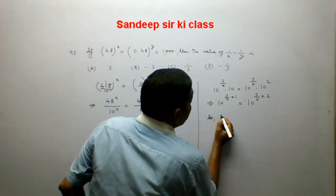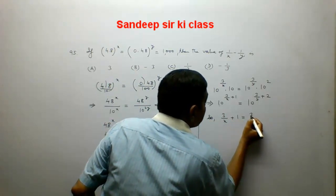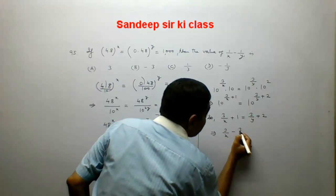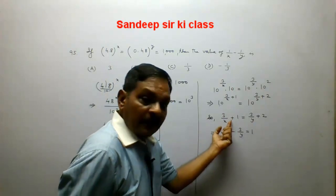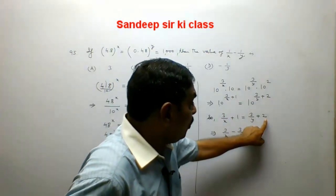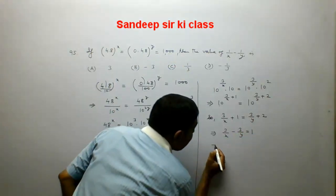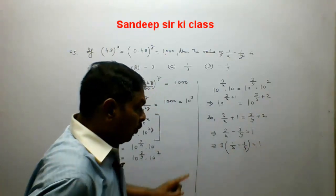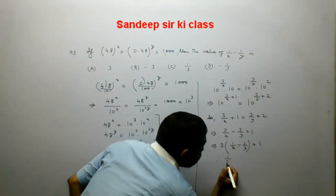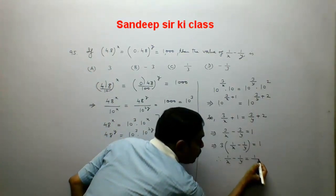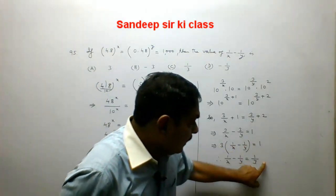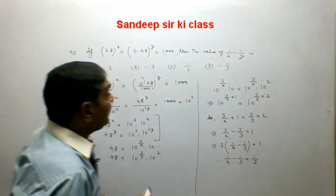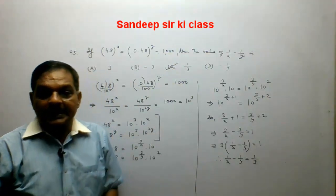So 3 upon x plus 1 equals 3 upon y plus 2. Transposing, 3 upon x minus 3 upon y equals 1. Taking 3 as common, we get 3 times (1 upon x minus 1 upon y) equals 1. Therefore 1 upon x minus 1 upon y equals 1 upon 3. Hence option C is the correct answer.